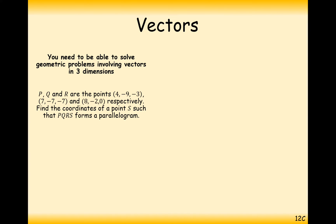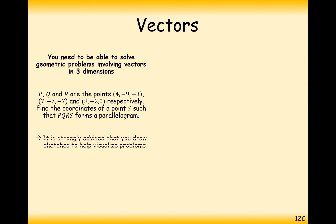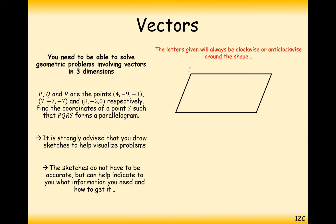Next question: P, Q, R are the points 4, minus 9, minus 3. Q is 7, minus 7, minus 7. And R is 8, minus 2, 0. Find the point S such that P, Q, R, and S form a parallelogram. I'd probably draw myself out a diagram to help visualise this. Label your points P, Q, R, and S, going round in a circle — either clockwise or anti-clockwise. Don't skip; you have to read it round clockwise.